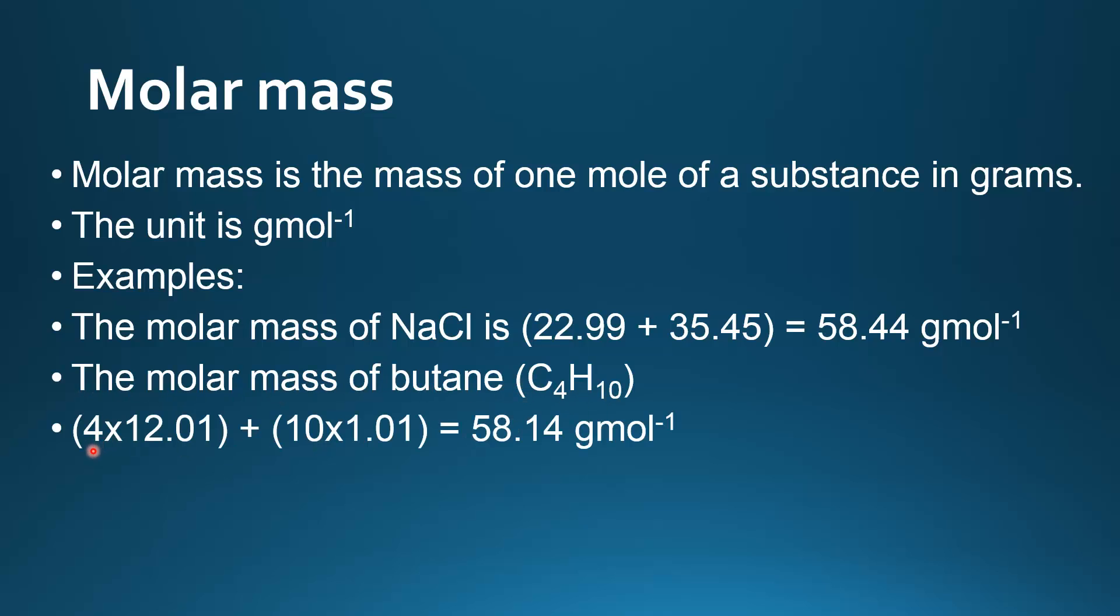We have 4 carbon atoms and the relative atomic mass of carbon is 12.01, and we have 10 hydrogen atoms and the molar mass of hydrogen is 1.01. We add those together and get a molar mass of 58.14 grams per mole.